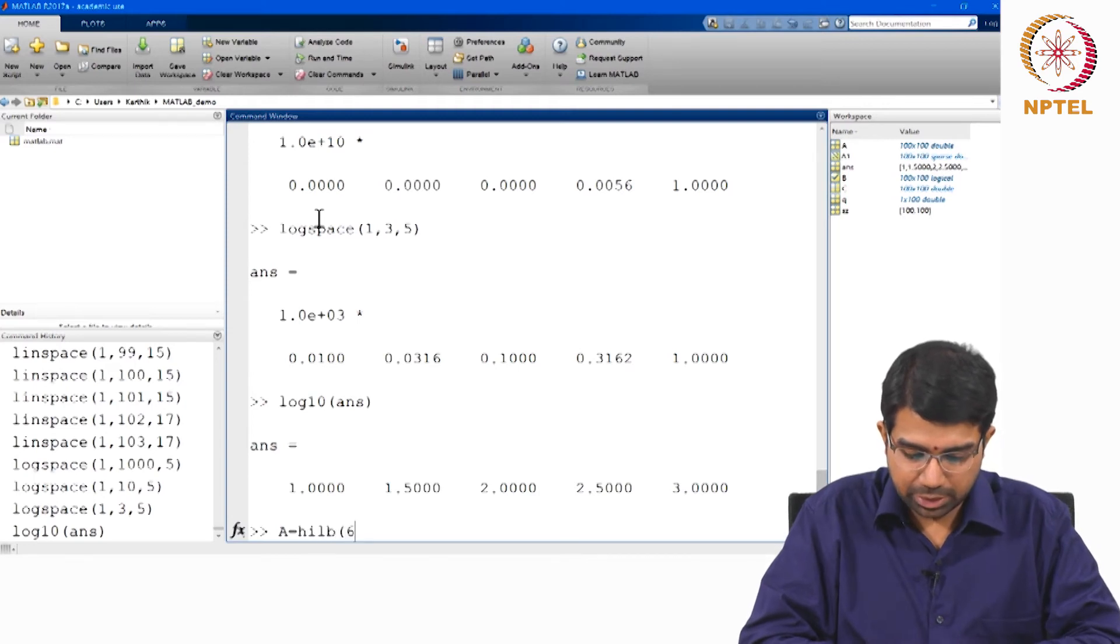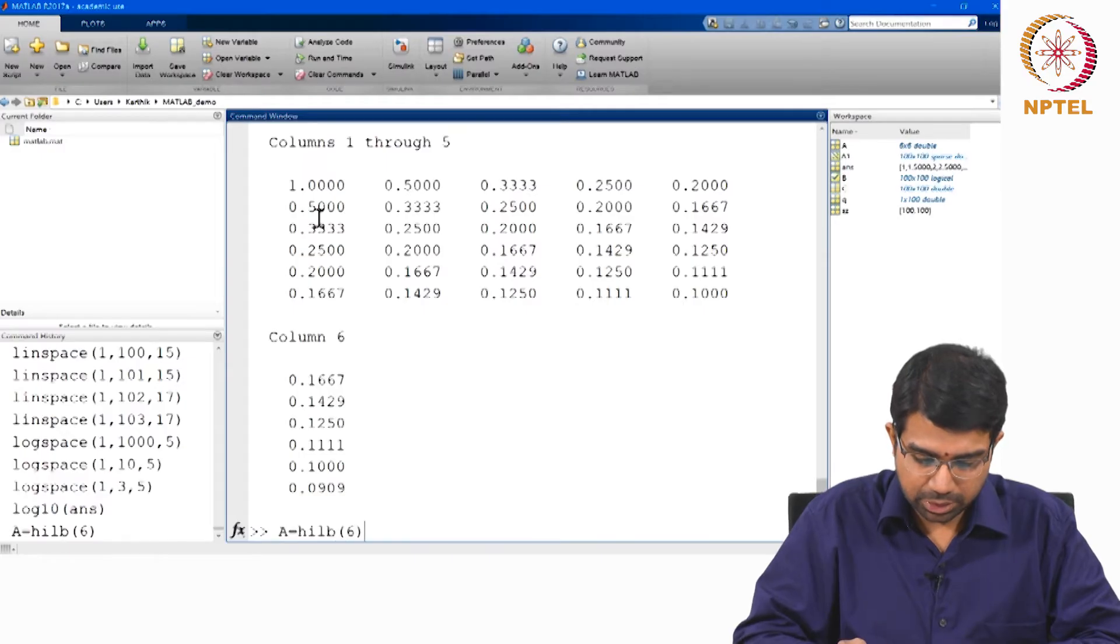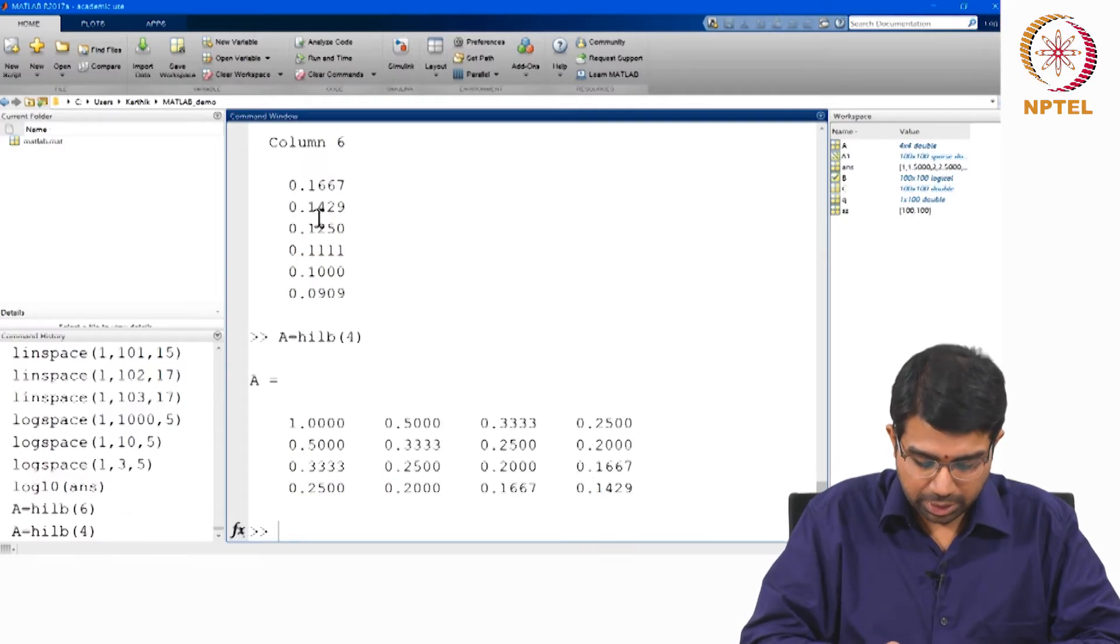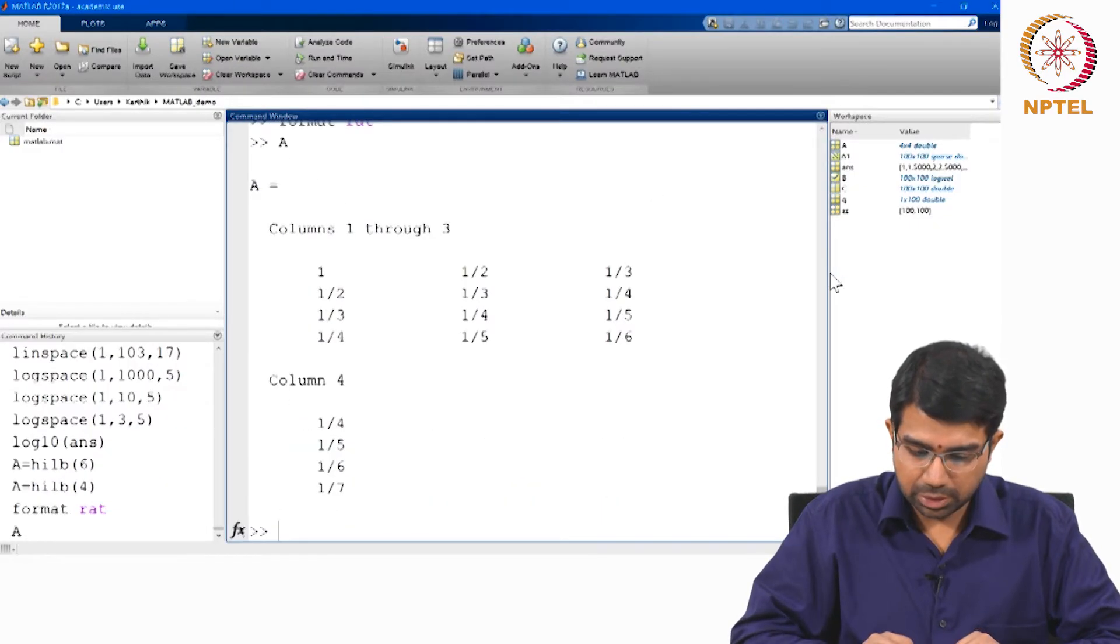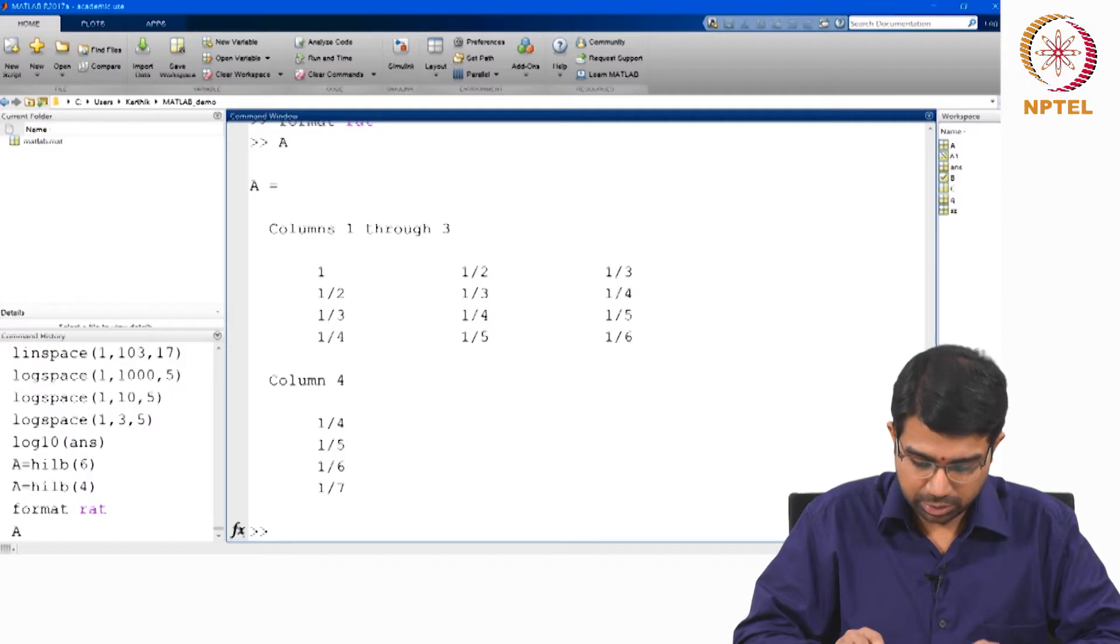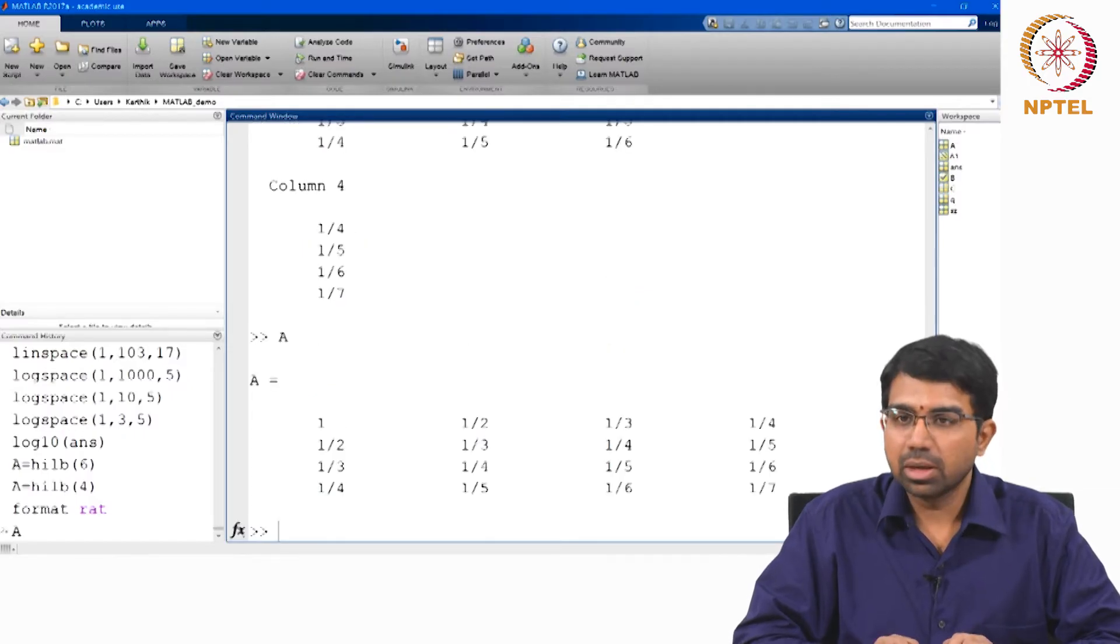Let us create a special matrix, this is called the Hilbert matrix. Let us make a smaller version of it. So this is the Hilbert matrix where A_ij is 1 by i plus j minus 1.